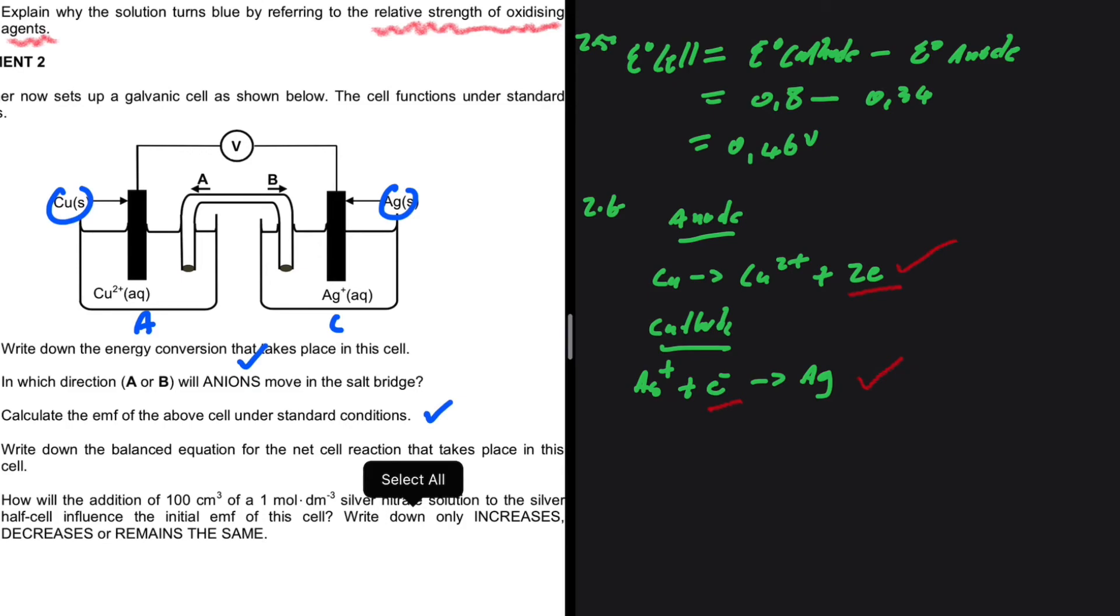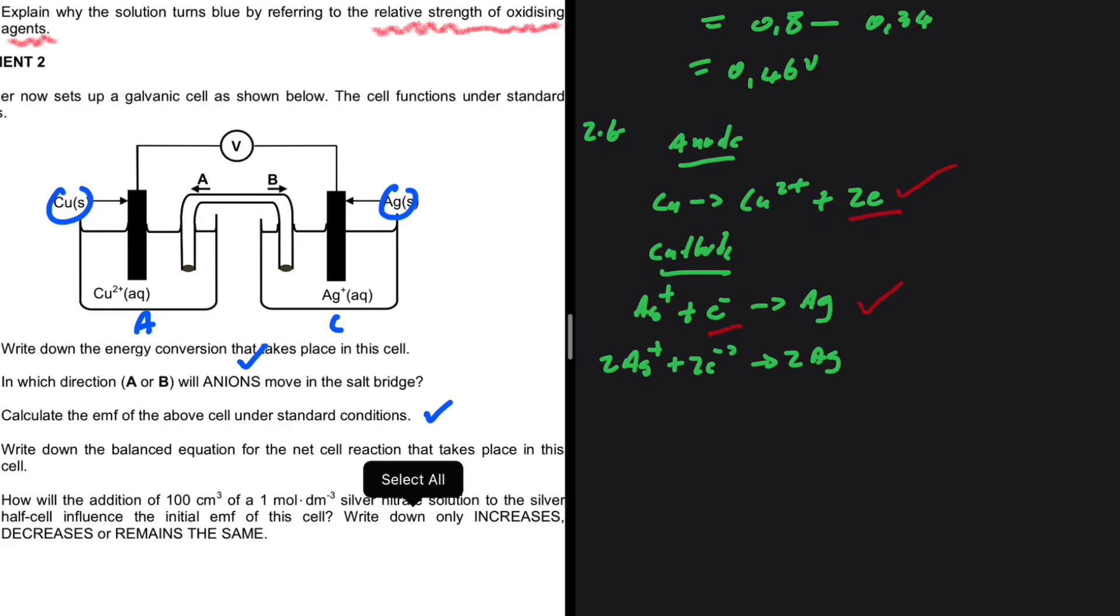So at the cathode, we're going to have 2Ag⁺ + 2e⁻ to give us 2Ag. Now when you have these two equations, what you need to do is add the left-hand side together and add the right-hand side.